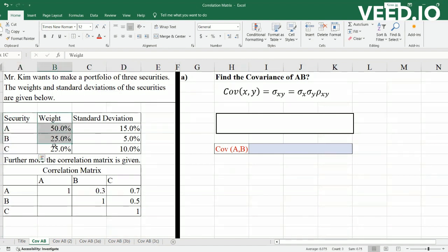So what we have is the securities, their weights, their standard deviations, and the correlation matrix. Since the correlation matrix is always symmetric, we only have the upper half of the correlation matrix. Correlation of A and B is 0.3, so correlation of B and A will also be 0.3. The correlation matrix is symmetric and thus we can have it in a triangular form.